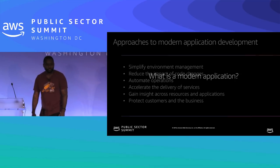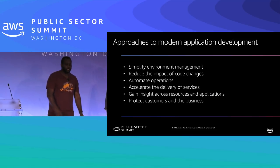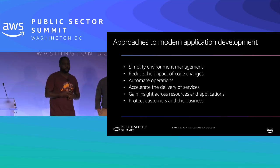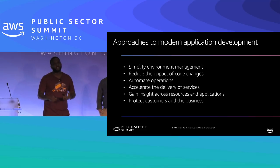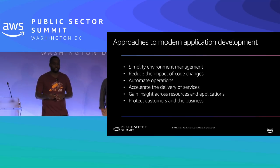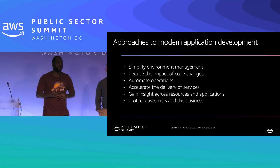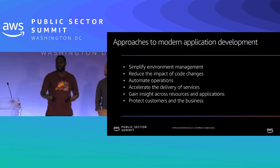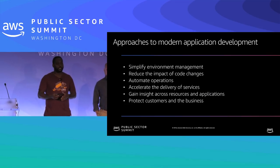So what's a modern application? These are aspirational goals. We want to simplify environment management — everyone will have multiple environments and that's a best practice. We want to reduce the impact of code changes so a change doesn't break things in production. We want to automate operations so nothing needs to be done manually. We want to accelerate the delivery of services — reduce the time from idea to implementation. We want to gain insight across resources, and we want to protect customers and business, because if security is violated, the application is no longer functional.